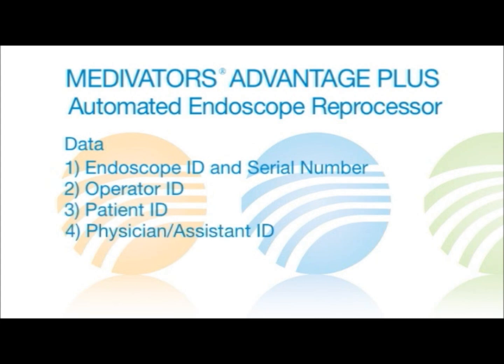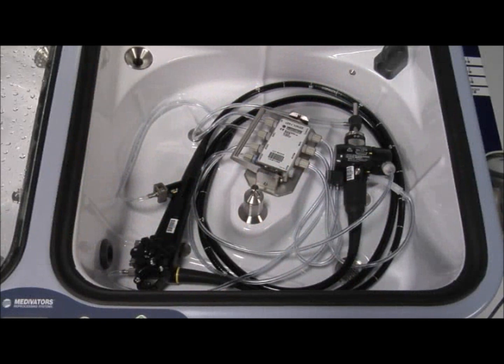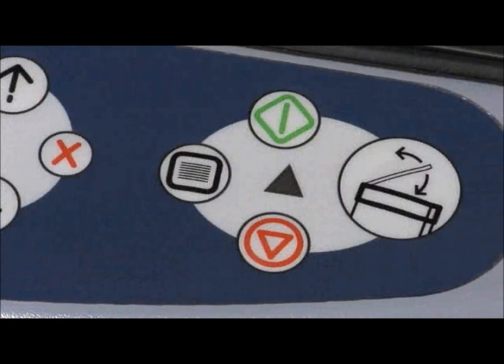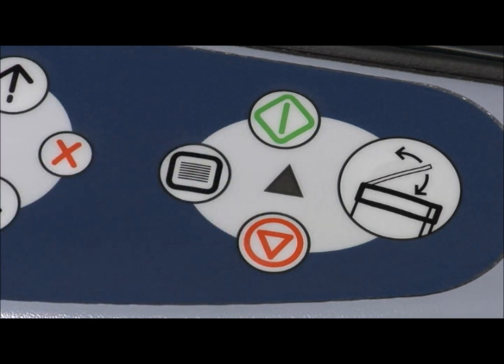The information requested will vary depending on how the Advantage Plus was set up. After the endoscope has been loaded into the basin, press the menu button on the basin side you would like to start. If you place the endoscope in the right basin, press the menu button on the right side.